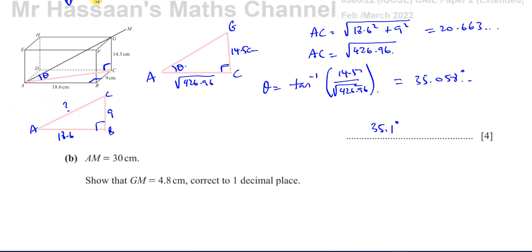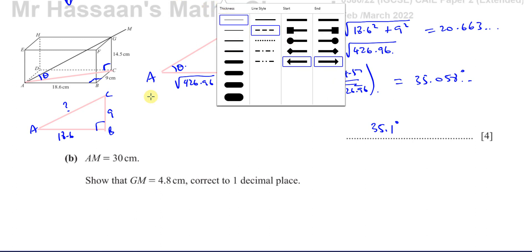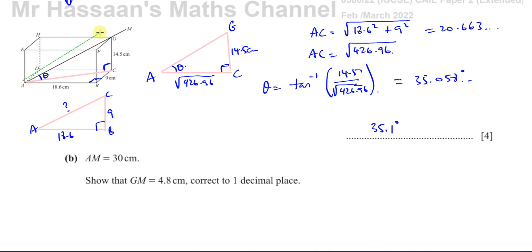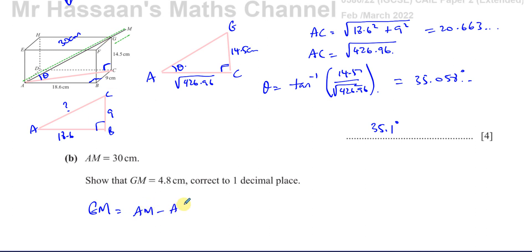For part b, we're told that AM is 30 cm — so the full length of the stick from A to M is 30 cm. We need to show that GM equals 4.8 cm correct to one decimal place. Basically, GM equals AM minus AG.